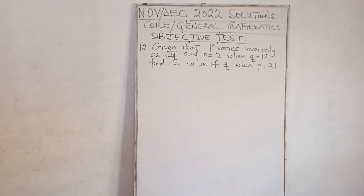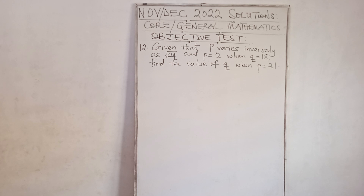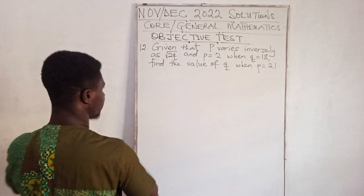Let's proceed to question 12, which states: given that P varies inversely as the square root of 2K, and P equals 12 when K equals 8, find the value of K when P equals 21. This is a variation question.